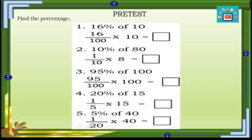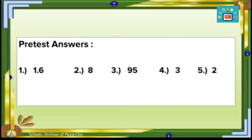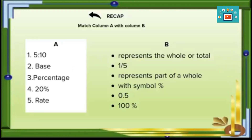Time is up. Here are the answers: number one is 1 and 6 tenths, number two is 8, number three is 95, number four is 3, and number five is 2.